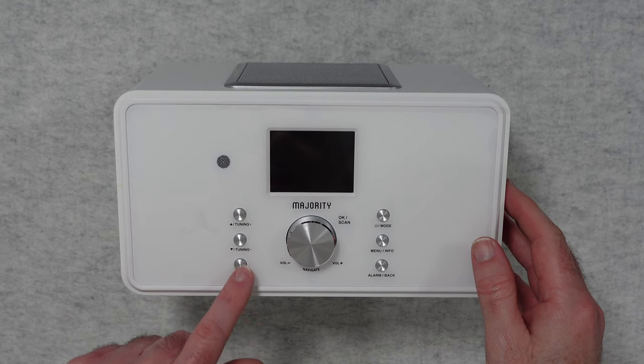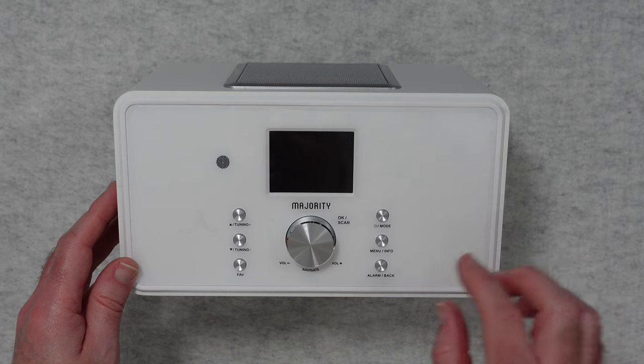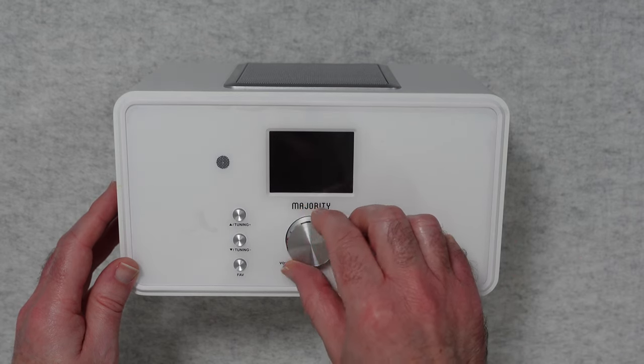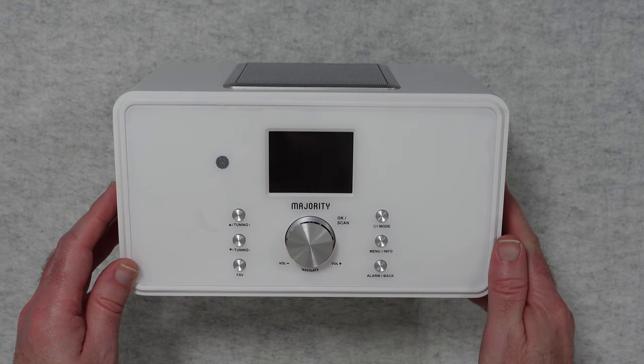We've got the display obviously in the centre here. We've got some tuning buttons, favourite buttons, power and mode button, menu and info, alarm and back. This is a navigation control which also acts as volume and it is a button as well.